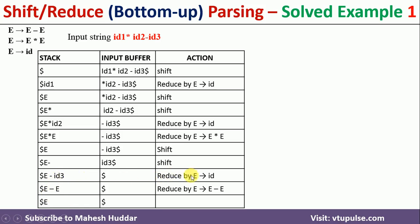Now e minus id3 is on the stack and nothing remains in the input buffer — the entire input is consumed. We reduce id3 to e using e → id, giving e minus e on the stack. This can be reduced to e by the rule e → e - e. We now have e on the stack top and the input buffer is empty, meaning the input string is valid with respect to the given grammar. Next, we draw the parse tree.